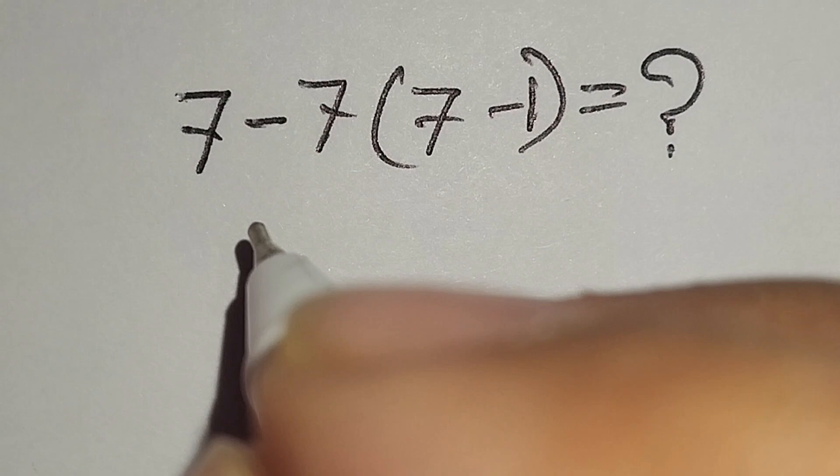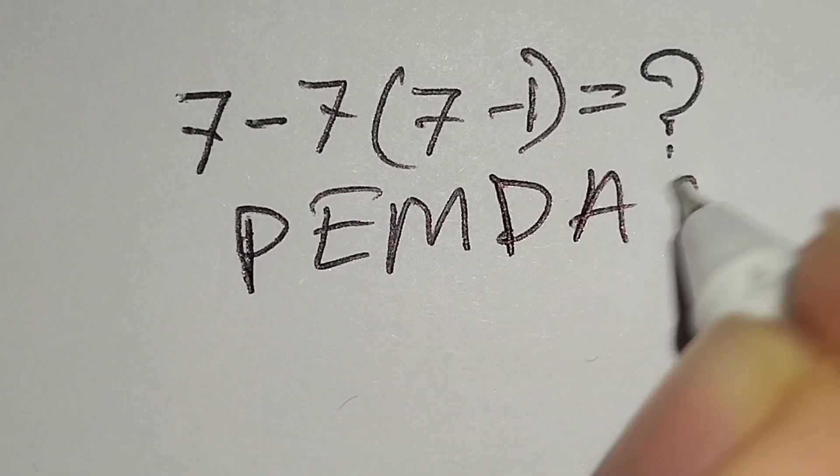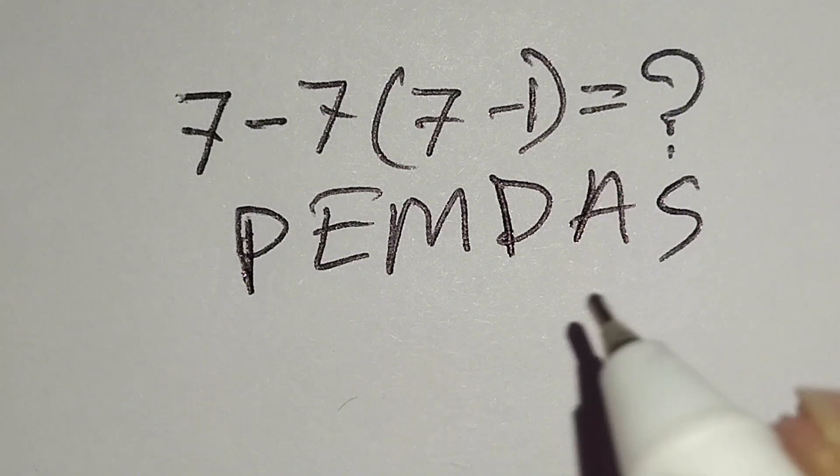Here P-E-M-D-A-S, PEMDAS. According to PEMDAS rule, at first we have to work with parenthesis, then exponent, then multiplication or division, then addition or subtraction.